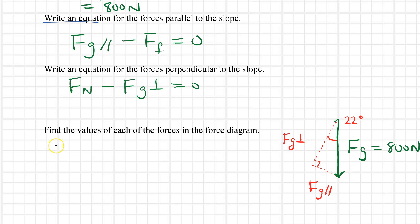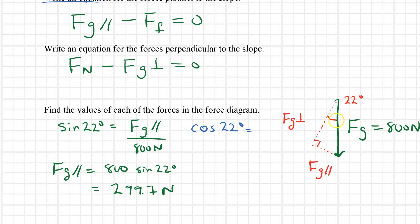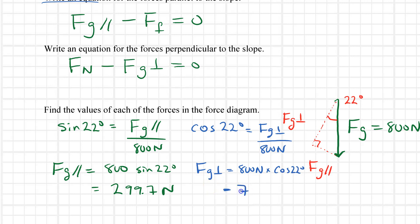Now using sine and cosine: sine of 22 degrees equals the opposite side, which is fg parallel, divided by the hypotenuse of 800 newtons. So fg parallel equals 800 times sine of 22 degrees, which is approximately 299.7 — pretty close to 300 newtons. For fg perpendicular, cosine of 22 degrees equals fg perpendicular over 800 newtons, so fg perpendicular equals 800 times cosine of 22 degrees, which gives approximately 742 newtons.